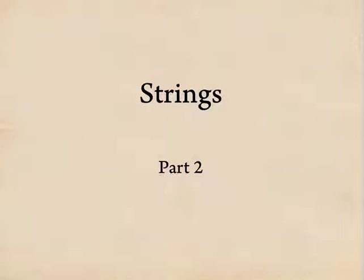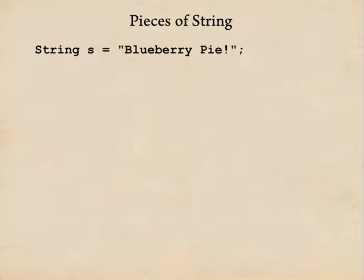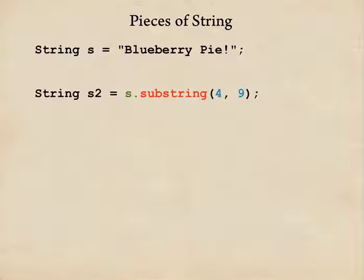In part one, we saw how to create a string and get back characters. But what if we'd like to extract a whole word as a single string? There's another operation that lets us do just that. Here's our string s. To pull out a range of characters, we call substring. It takes two arguments: the start and the end of the substring we want.